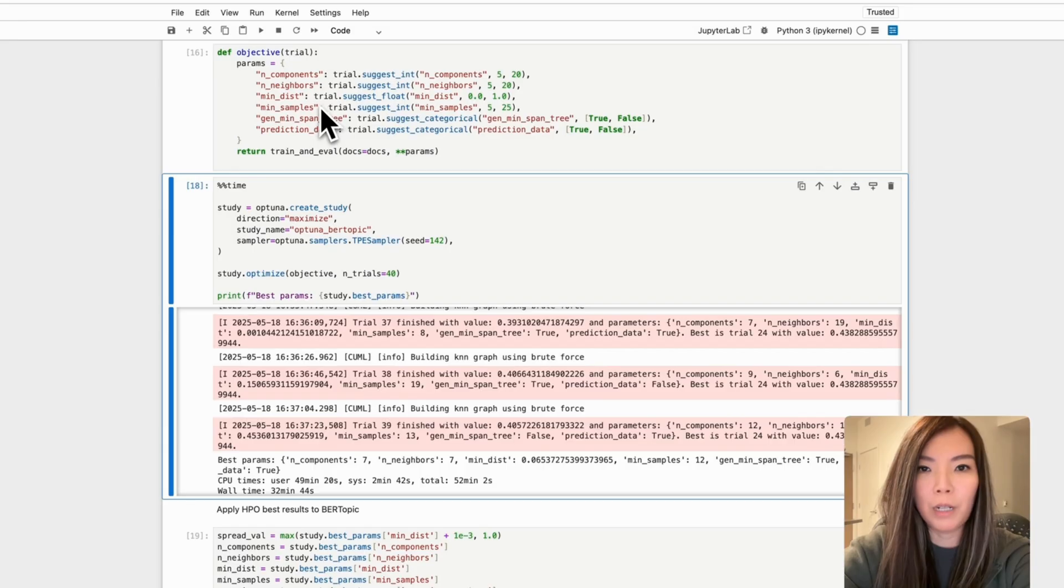First, we define the objective function. Inside the function, we specify a range of hyperparameters that we want Optuna to search over. These include the number of UMAP components, number of neighbors, minimum distance, and HDBSCAN parameters like min_samples.